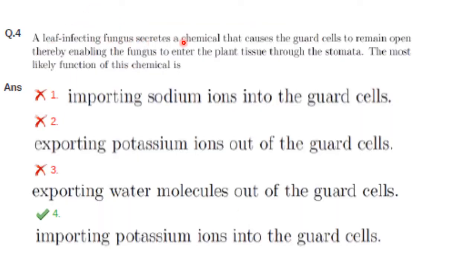Next question: a leaf-infecting fungus secretes a chemical that causes guard cells to remain open, enabling the fungus to enter plant tissue through the stomata. The most likely function of this chemical is one of: importing sodium ions into guard cells, exporting potassium ions out of guard cells, exporting water molecules out of guard cells, or importing potassium ions into guard cells.